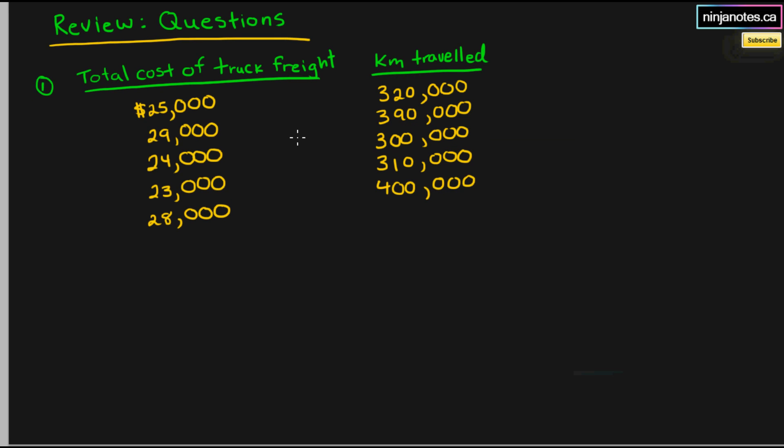First of all, we look at, we have two different columns. One is the total cost of trucking freight and the second column is kilometers traveled.